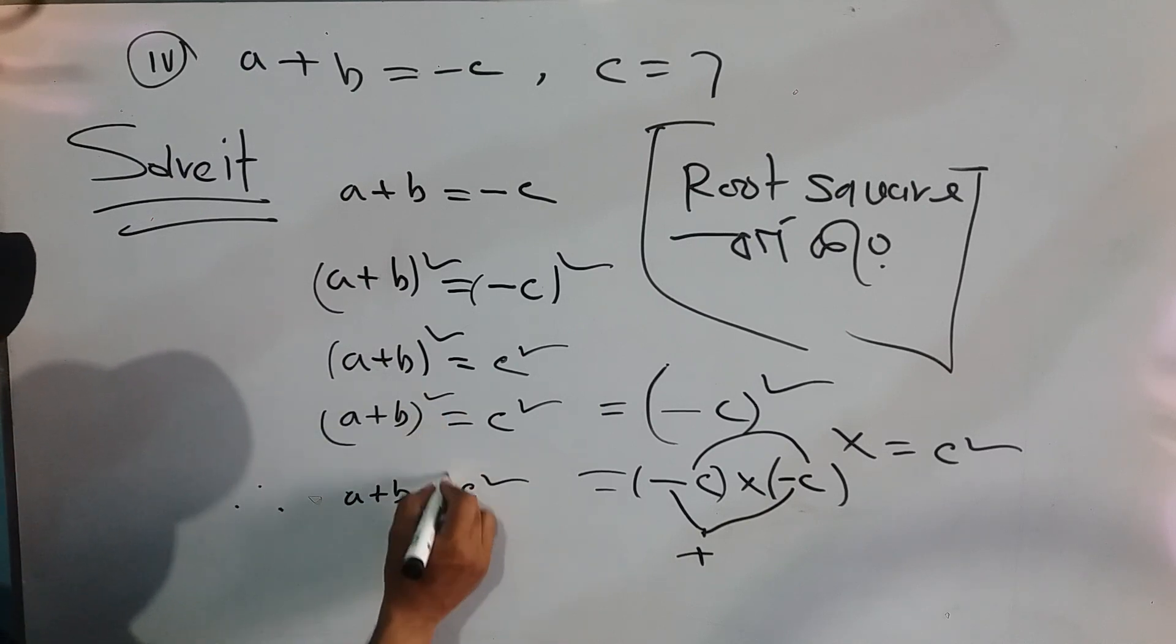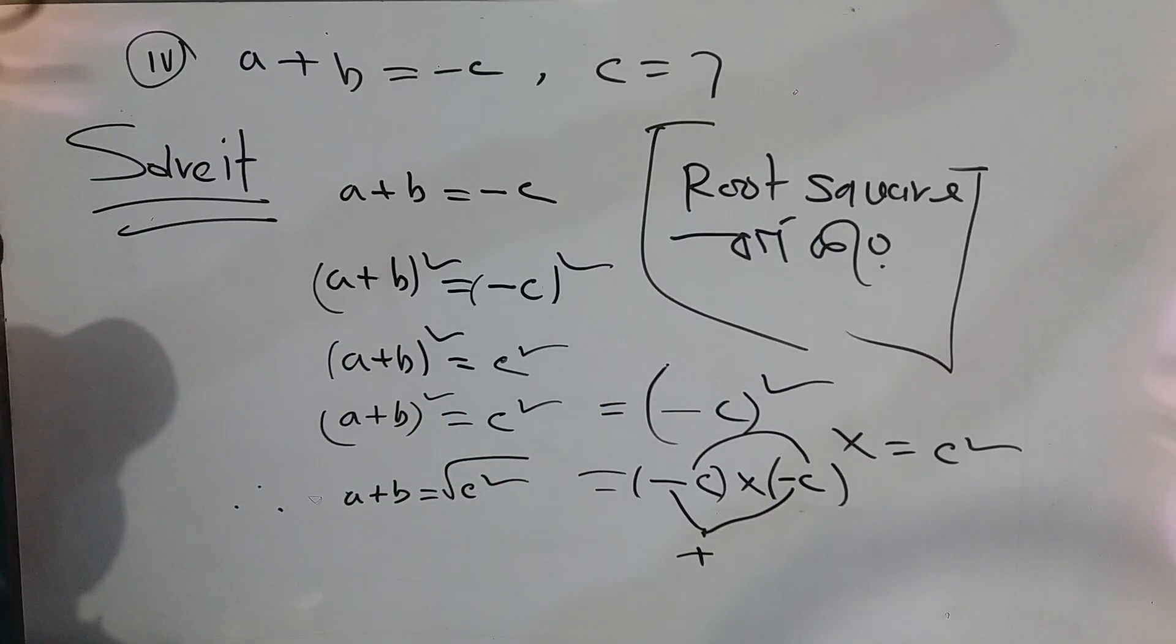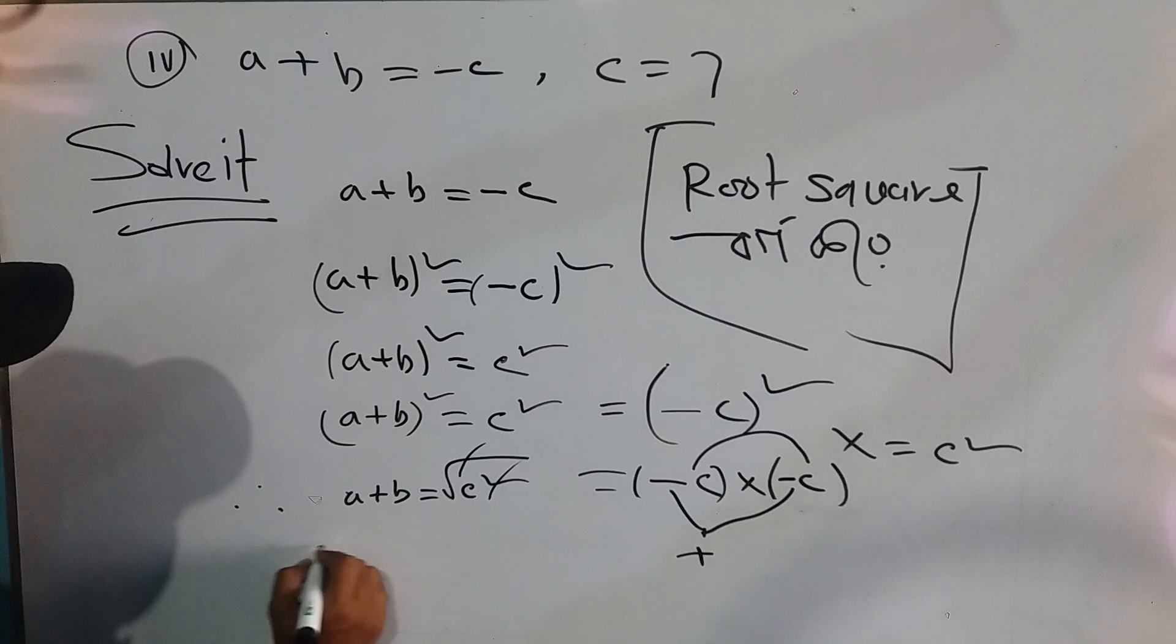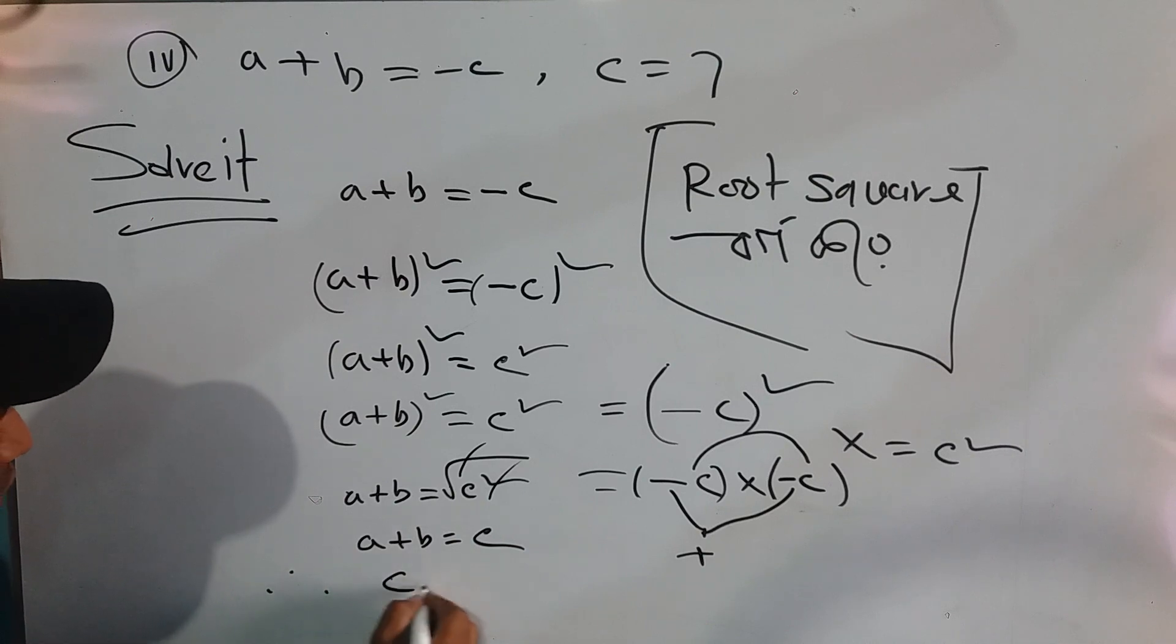Taking square root of both sides: square root of a plus b squared equals square root of c squared. The square root and square cancel out, so a plus b equals c.